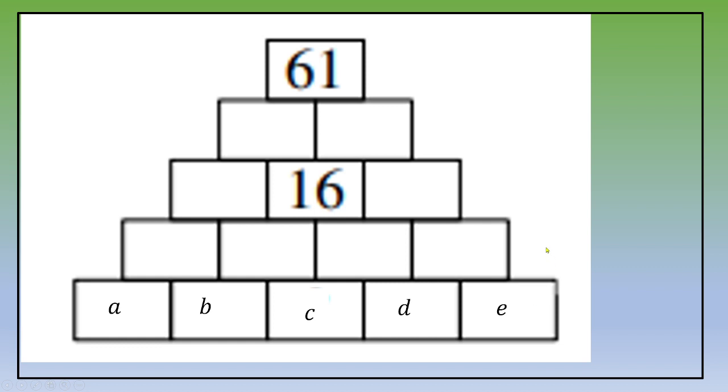Then if we focus on row number two, we've got a plus b, b plus c, c plus d, and d plus e.